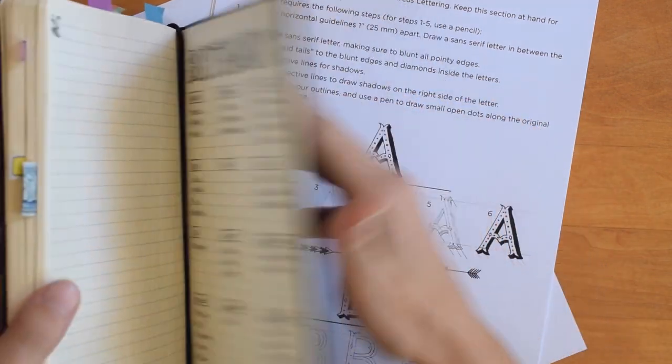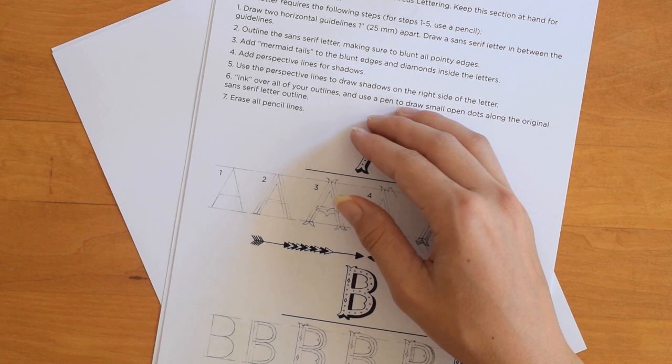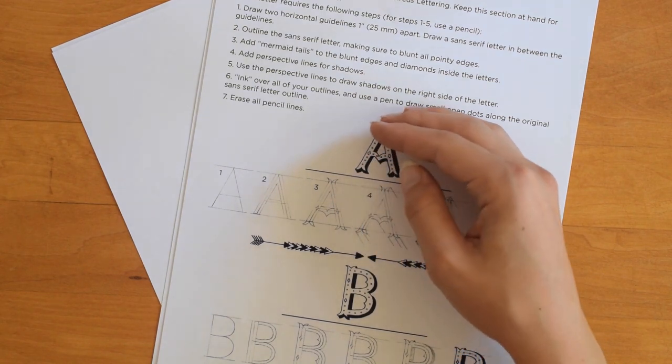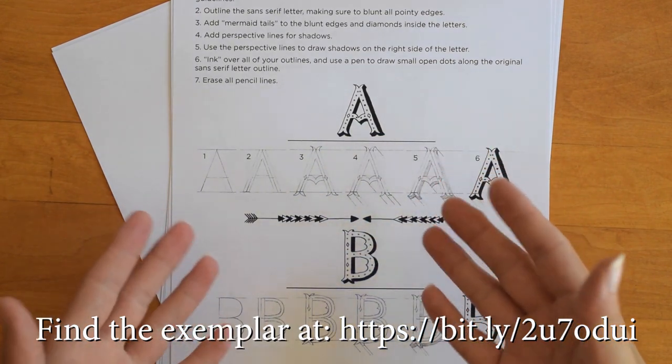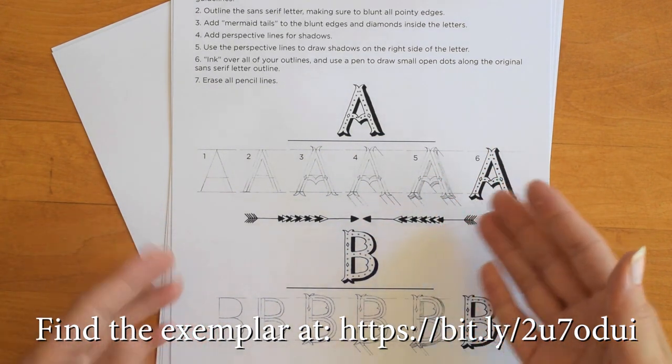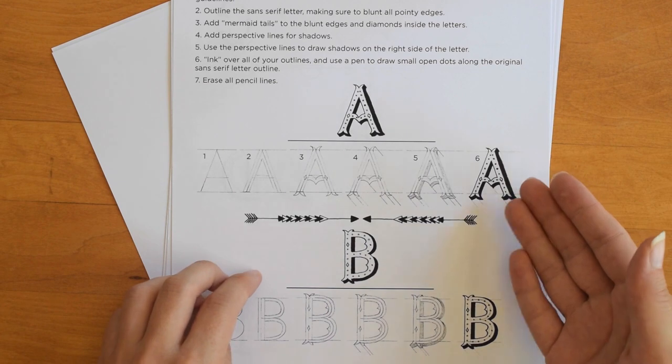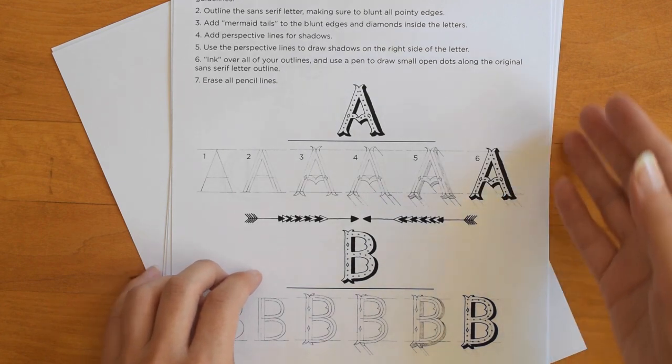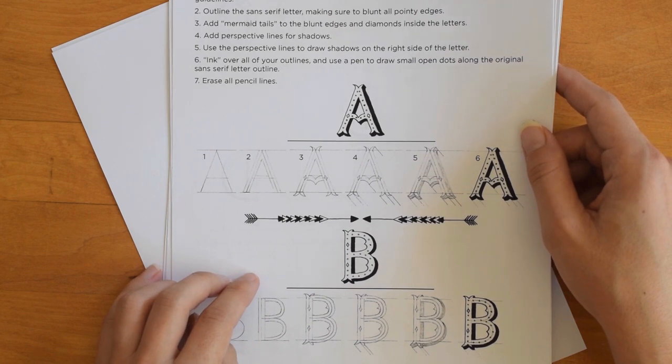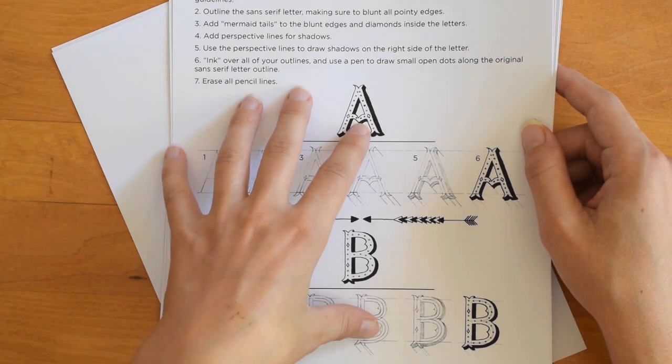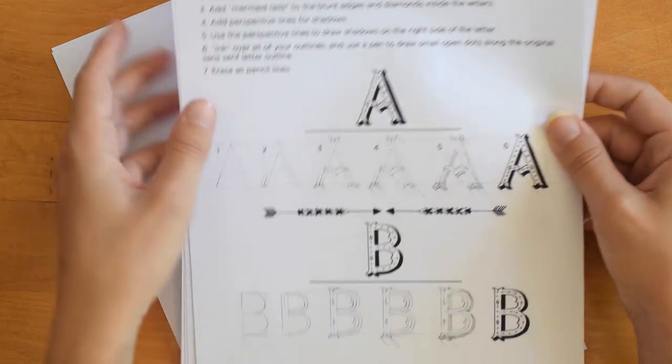Okay, so let's get started here. First of all, I just made an exemplar for this lettering style. And you can see that the exemplar shows you step by step how to make every single letter of the alphabet. Today I'm just going to write the word hi, which obviously is two letters. But if you want to write other words or other letters, you'll want to check out this exemplar which you can find on the TPK website.